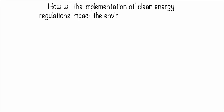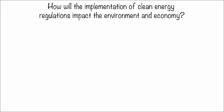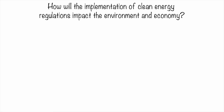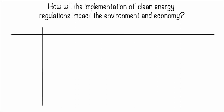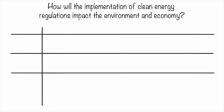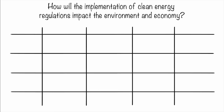you have to identify keywords in your question and which main topic those keywords fit in, whether it be social, political, economic, or technical. Draw a 5x4 grid and label the columns with the four main realms of your research and the rows with: question, narrow, and broad.